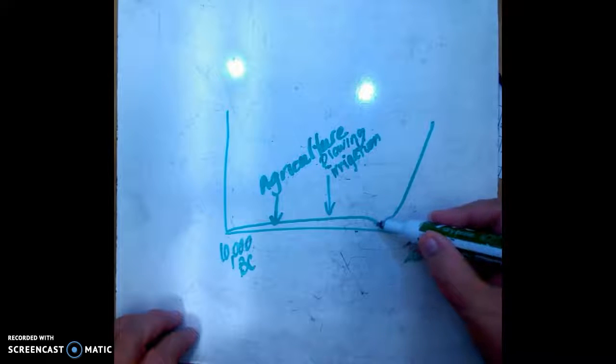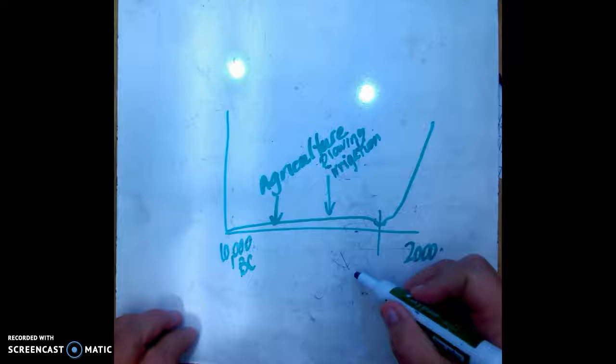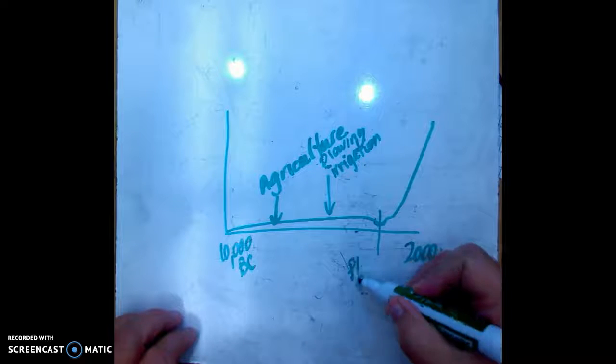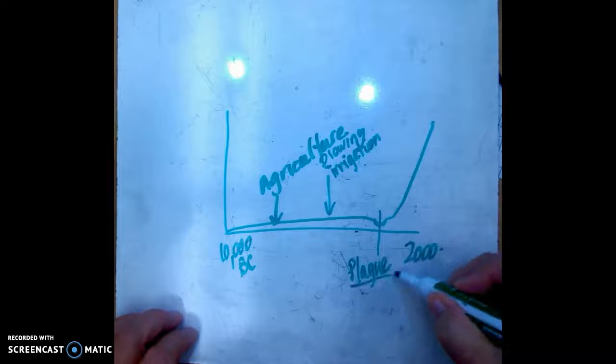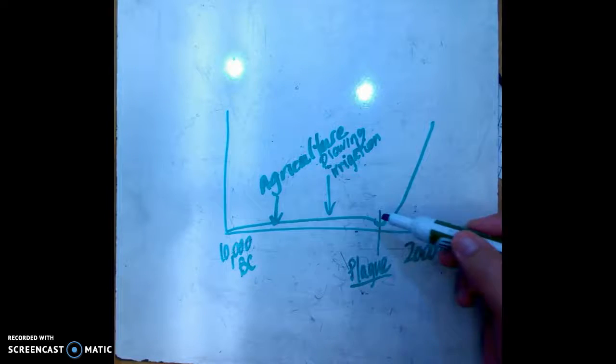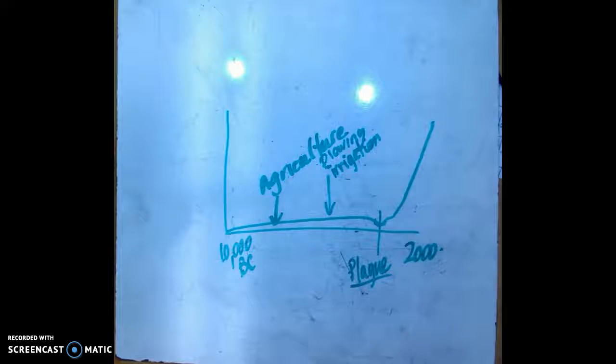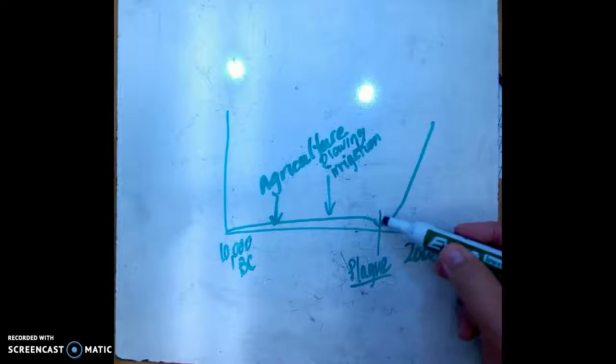The next major event actually is a decrease in the human population, and that was the plague - the bubonic plague, the black plague. This was devastating to the world's population. I think we lost a third of the world's population at this point. The plague was when people started traveling around from country to country, they were actually carrying diseases to new areas, so this was the big thing that made quite a significant change in the human population.